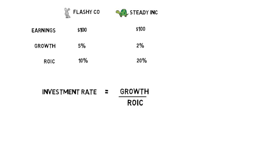Investment rate equals growth divided by return on invested capital. This formula links all three variables, so if you know any two of these variables, you can work out the third one. In this case, we know what growth is and we know what return on invested capital is, so we can work out the investment rate.